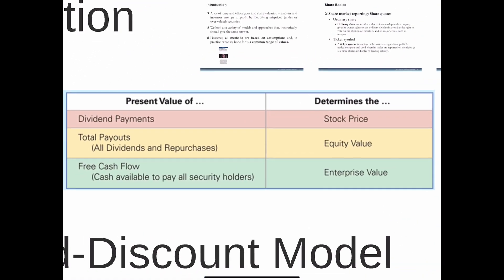Now let's look at our dividend discount model. We'll price each company's shares based on the present value of the following: the present value of dividend payments to determine the stock price, and the present value of all payouts — dividends and repurchases — to determine the equity value. Chapter 10 covers free cash flow, evaluating a company based on the present value of all future cash flows available to both equity holders and debt holders, which determines enterprise value — but we're not covering that in this unit.